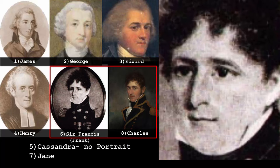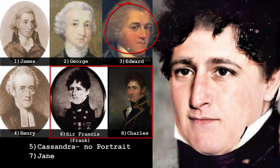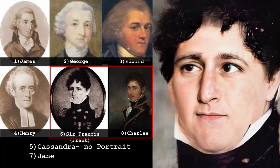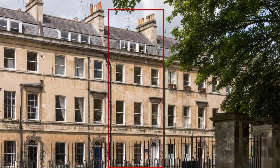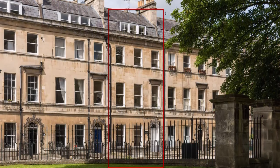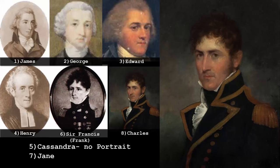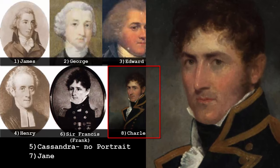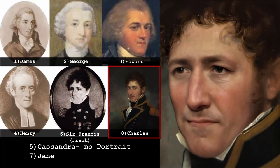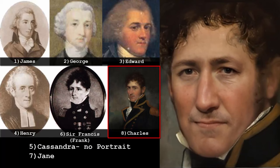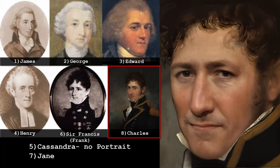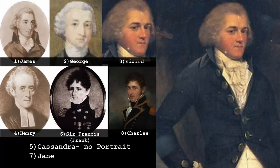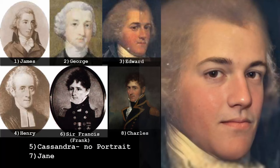In December 1800, George Austen unexpectedly announced his decision to retire from the ministry and move the family to 4 Sydney Place in Bath. All the sons had moved out by now, so while retirement and travel were good for the elder Austens, Jane was shocked to be leaving the only home she had ever known. It was here in Bath that Jane was either too depressed or too busy to make notable strides in her literary career. She did receive one marriage proposal during this time from a childhood neighbor — wealthy and able to provide for her family — but she refused because she did not love him. Then her father died in 1805 and the family's circumstances worsened.